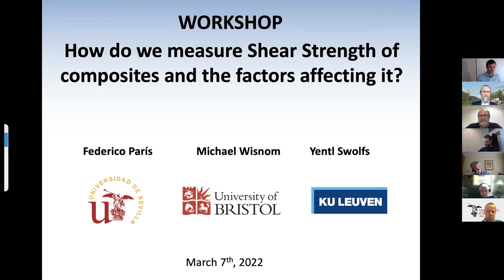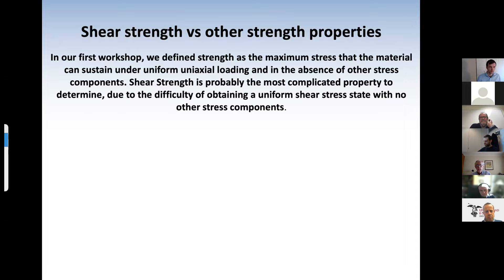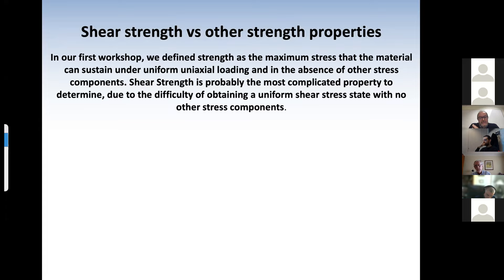Now, entering into the presentation: how do we measure shear strength of composites and the factors affecting it? In our first workshop, we defined strength — if applied to composites — as the maximum stress that the material can sustain under uniform uniaxial loading and in the absence of other stress components. Shear strength is probably the most complicated property to determine due to the difficulty of obtaining those two conditions: a uniform shear stress state with no other stress components.